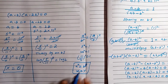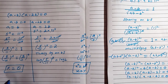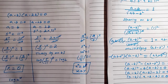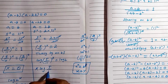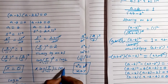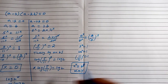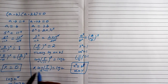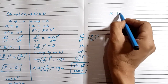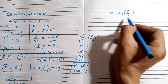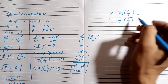Taking log of both sides: log(5/11)^x = log 2. Using the log formula log(a^x) = x·log(a), we get x·log(5/11) equals log 2. Dividing both sides by log(5/11): x equals log 2 divided by log(5/11).